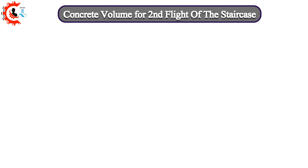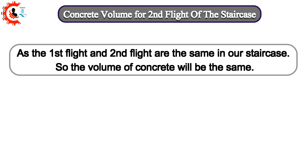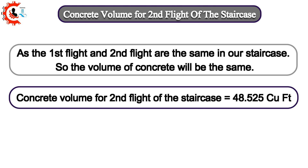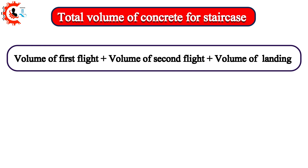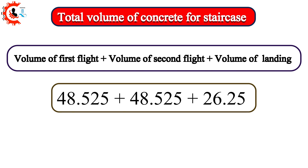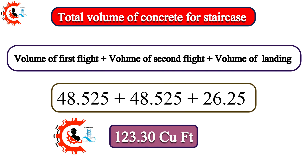Concrete volume for the second flight of the staircase: as the first flight and second flight are the same in our staircase, the volume of concrete will be the same — 48.525 cubic feet. Therefore, the total volume of concrete for the staircase = volume of first flight + volume of second flight + volume of landing = 48.525 + 48.525 + 26.25 = 123.30 cubic feet.